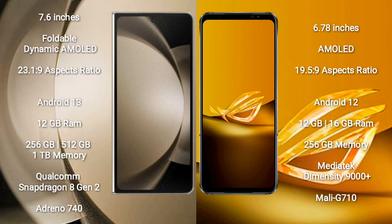Samsung Galaxy Z Fold 5 comes with 12GB RAM and 256GB, 512GB, or 1TB internal storage, with a Qualcomm Snapdragon 8 Gen 2 processor and Adreno 740 GPU. Asus ROG Phone 6D comes with 12GB or 16GB RAM and 256GB internal storage, with a MediaTek Dimensity 9000 Plus processor and Mali-G710 GPU.